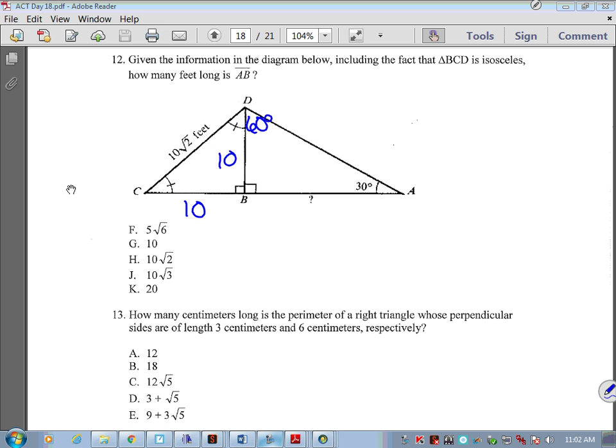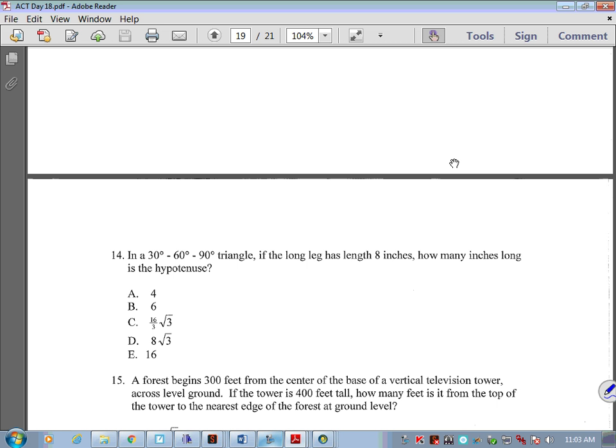So this has to be 60. If 30 is 10, opposite my 30 is 10, then I know that this is 20, right? 10 radical 3. So just special right triangles. 10 radical 3. Nobody on 13.